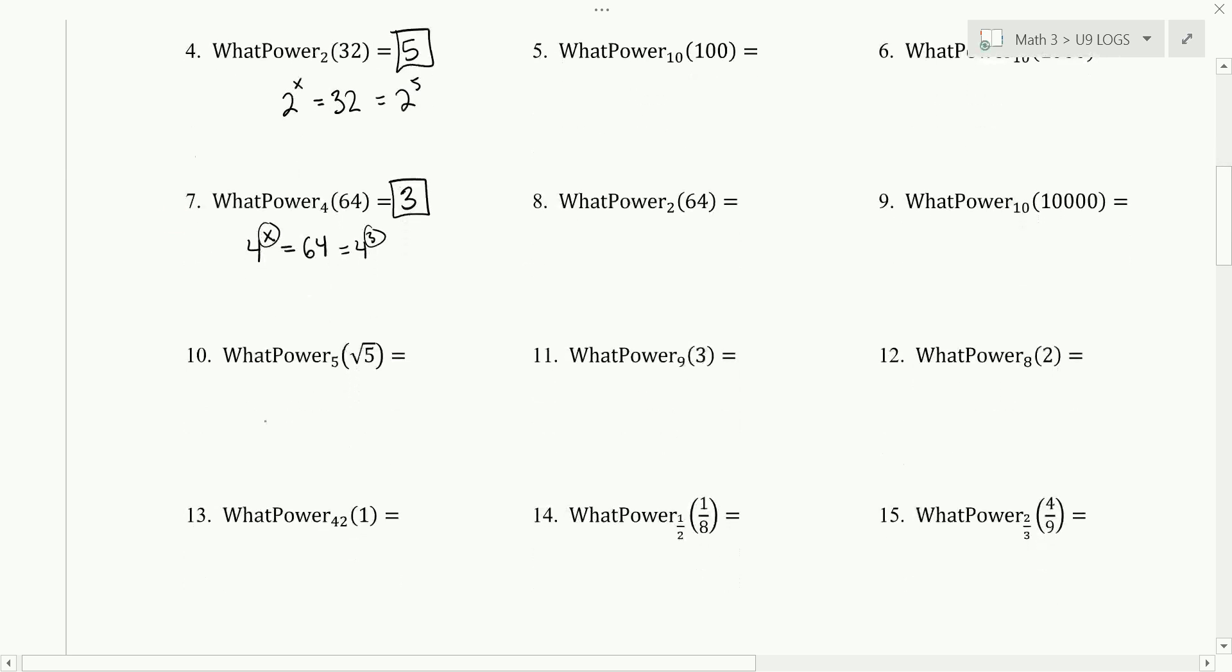Number 10 is asking the question 5 to what power is the square root of 5. Whenever you have a square root or a cube root or some kind of root, you're going to be working with a fractional exponent. So here the root is 2, invisible 2, the power of 5 is 1. So this is really 5 to the 1 over 2. And so x is 1 half.